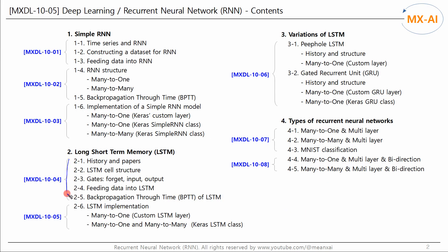In the previous video, we looked at the structure of many-to-one LSTM. In this video, we will implement it in code. First, let's implement an LSTM cell using Keras' custom layer and implement a many-to-one LSTM model to predict time series. Next, let's implement many-to-one and many-to-many LSTM models using Keras' LSTM class.